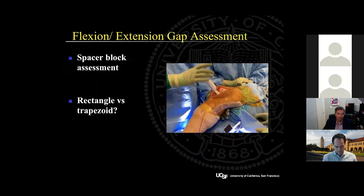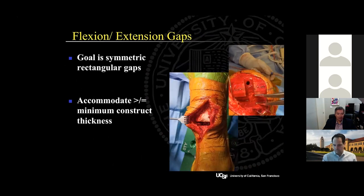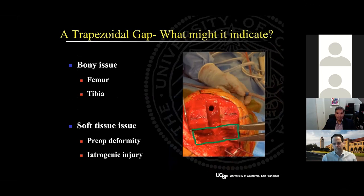Next, you can check your flexion and extension gaps with spacer blocks, with the goal of obtaining symmetric rectangular gaps that accommodate at least the smallest composite thickness of your system. While our goal is a rectangular gap, what if you get a trapezoidal gap? I think of it in terms of bony issues — either the femur or the tibia — or soft tissue issues, whether due to the patient's preoperative deformity or an iatrogenic injury.